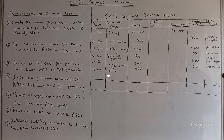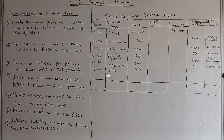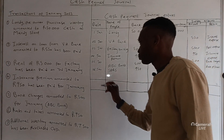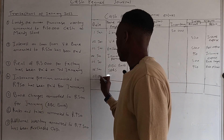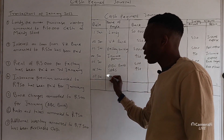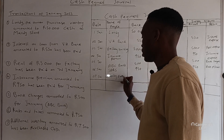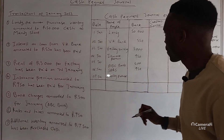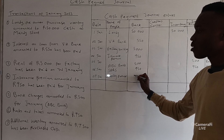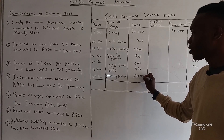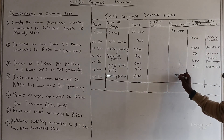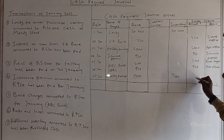Transaction seven: additional inventory amounting to 7,500 has been purchased for cash on 7 January. This company has purchased further inventory for 7,500. Since they didn't give us the name of the supplier we can write inventory purchase as the name of payee. The amount is 7,500 and it is recorded under the inventory column, with nil in the creditors control column.